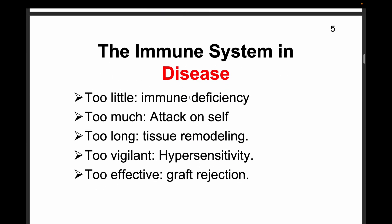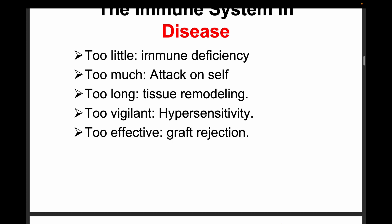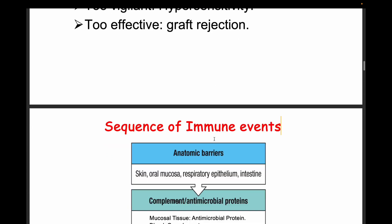If the immune response is too little, it results in immune deficiency. If the response is too much, it attacks self, causing autoimmune diseases. If it is too prolonged, it leads to tissue remodeling — changing the tissue. If it is too vigilant, it causes hypersensitivity. If too effective, it results in graft rejection, relevant to organ transplant.